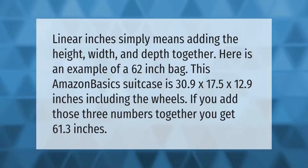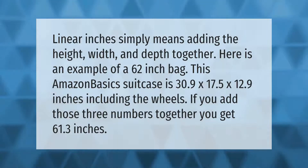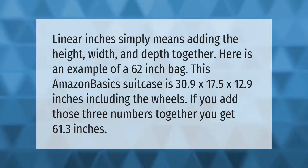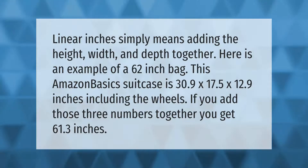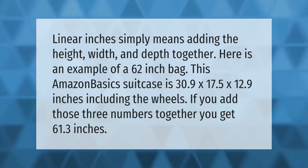Linear inches simply means adding the height, width, and depth together. Here is an example of a 62-inch bag. This Amazon Basics suitcase is 30.9 by 17.5 by 12.9 inches, including the wheels. If you add those three numbers together, you get 61.3 inches.